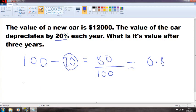And then you would do $12,000 times by 0.8. Now, because there is a 3 here, because it depreciates over 3 years, you put it to the power of 3.